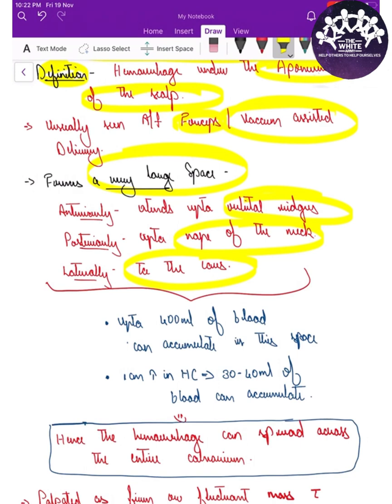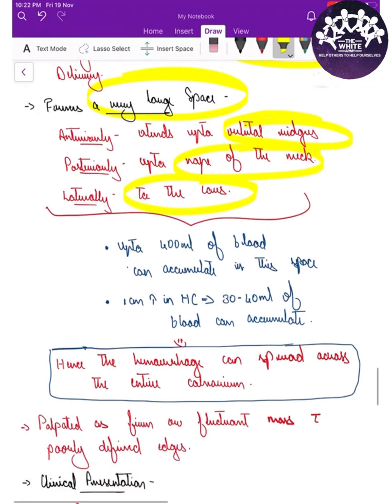When blood expands throughout this huge space, it can accumulate as much as 400 ml of blood. Obviously, if there is this much amount of bleed in a neonate or newborn, that newborn will end up with some degree of hypovolemia.